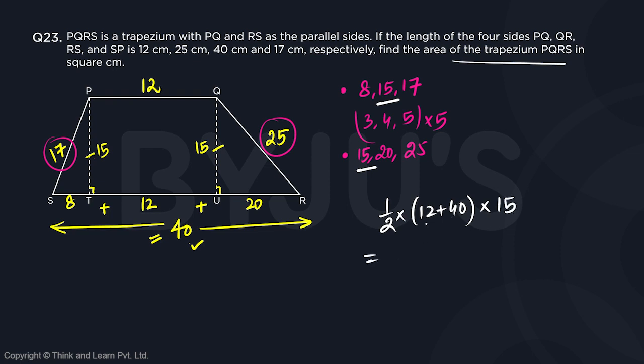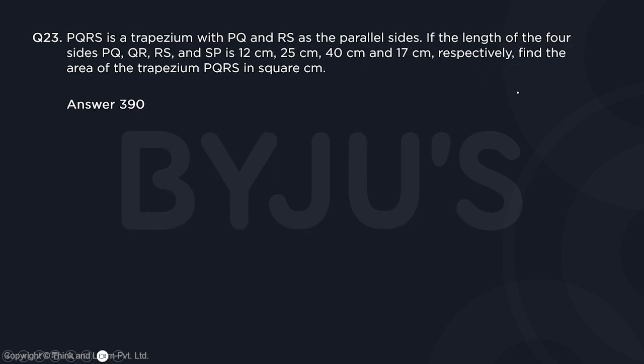Which is half of 52, which is 26 into 15, which will result in 260 plus 130, 390 centimeter square. Since it's a theta question we are supposed to type in 390 and 390 will be the answer.